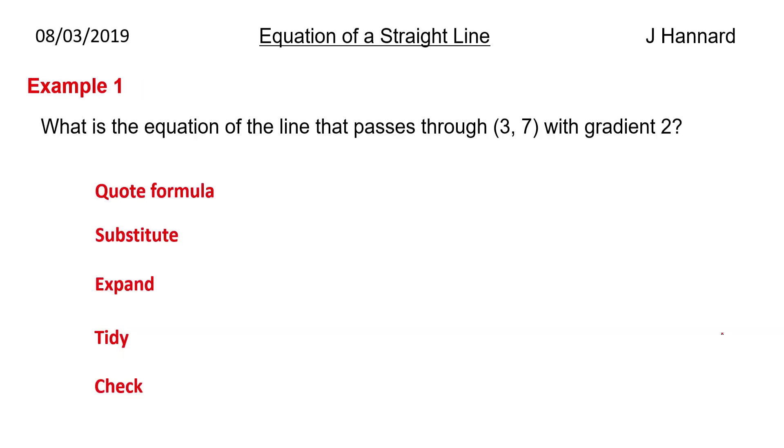Example one: what is the equation of the line that passes through (3, 7) with a gradient of 2? Well we quote the formula, y minus b equals mx minus a. We then substitute in, so our b value is 7, our a value is 3 and our gradient m is 2. So we stick them numbers in: y minus 7 equals 2 times x minus 3.